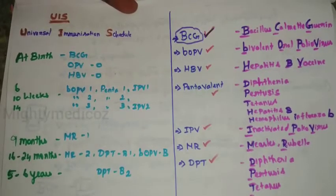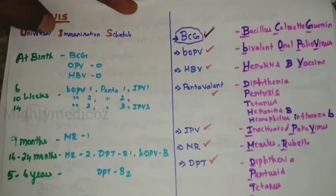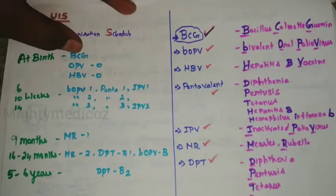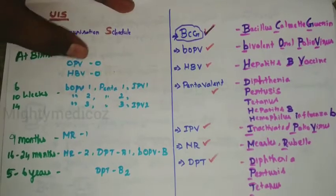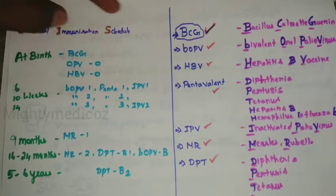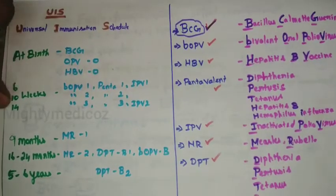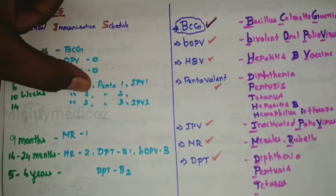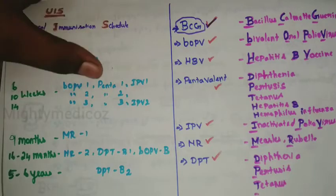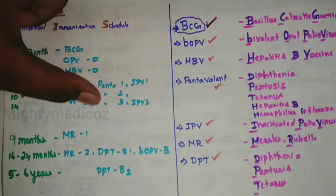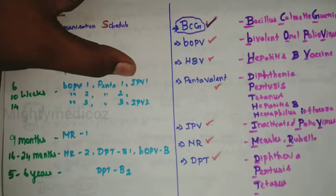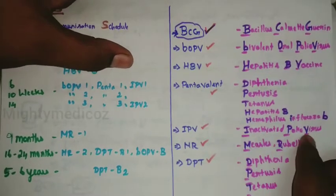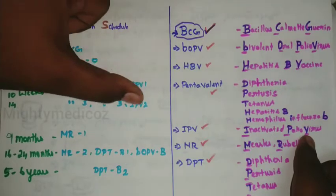Universal immunization schedule. At birth, three vaccines are given: BCG, OPV zero dose, and Hepatitis B zero dose. At 6, 10, and 14 weeks: bivalent OPV 1st, 2nd, and 3rd dose; pentavalent 1st, 2nd, and 3rd dose; and IPV, which is inactivated poliovirus vaccine, at 6th week and 14th week.